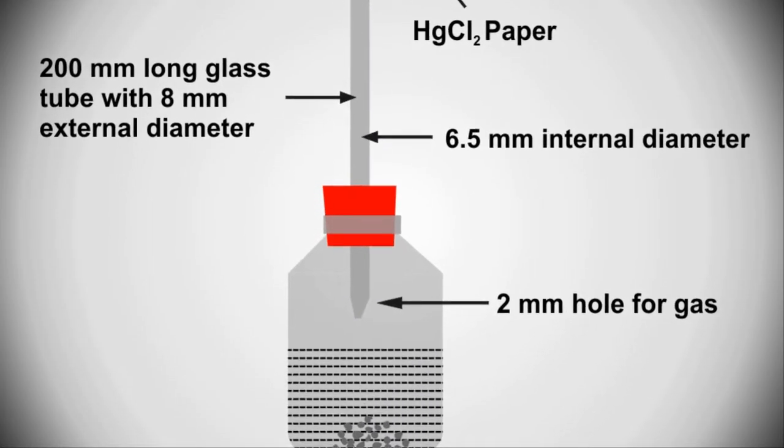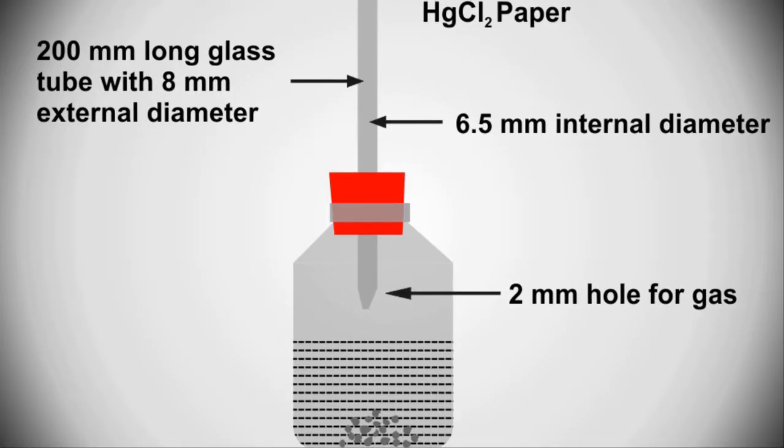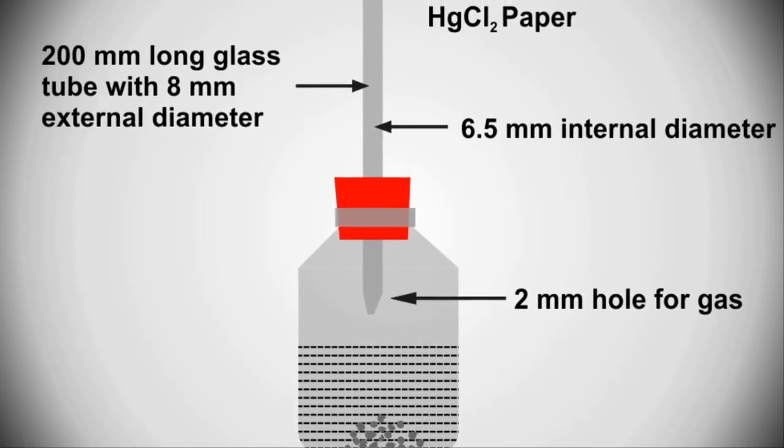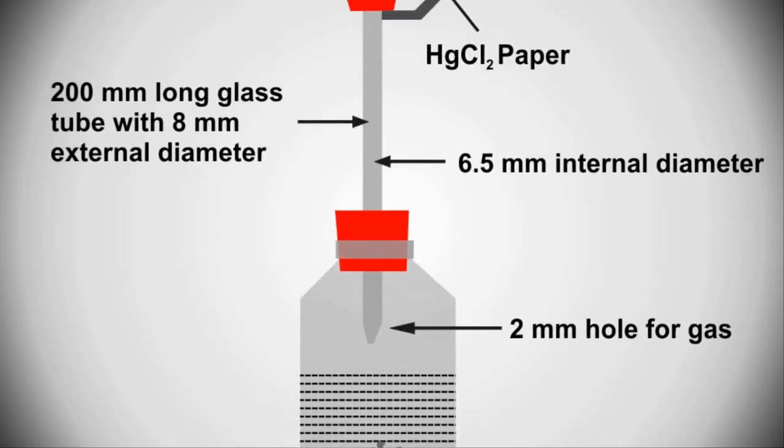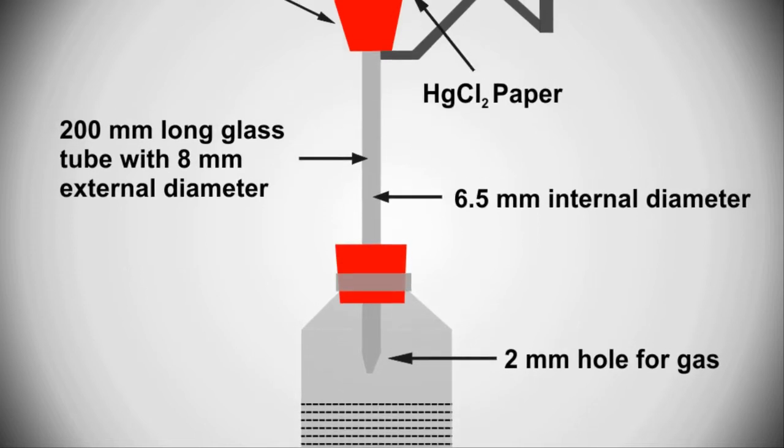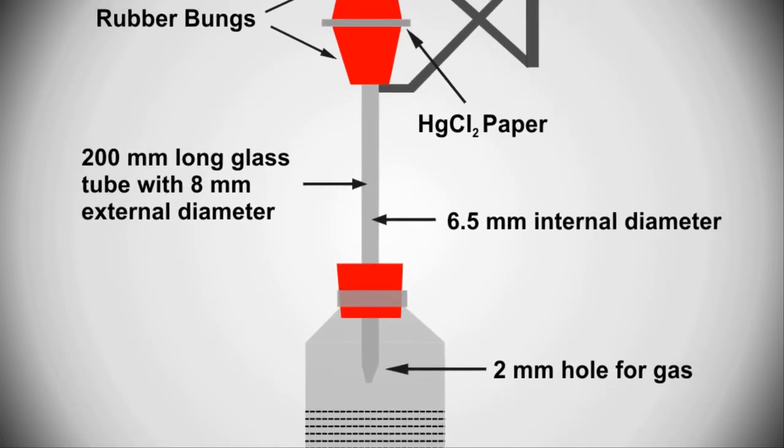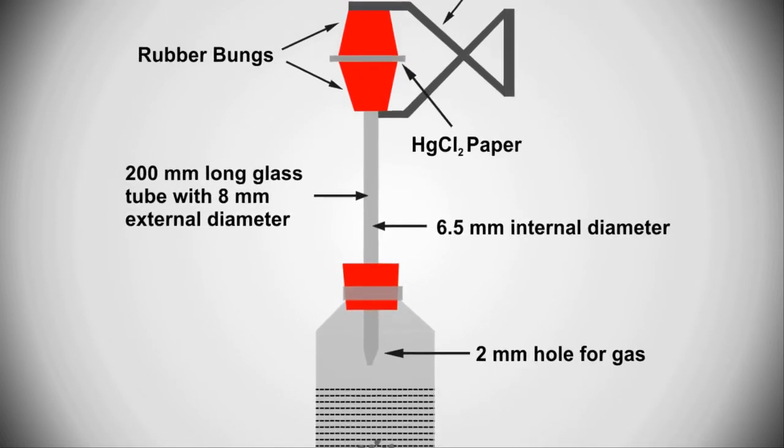Arsenic limit test apparatus consists of 120ml capacity wide mouth bottle fitted with a rubber bung through which passed a glass tube of approximately 20cm and 6 to 8mm diameter is used.